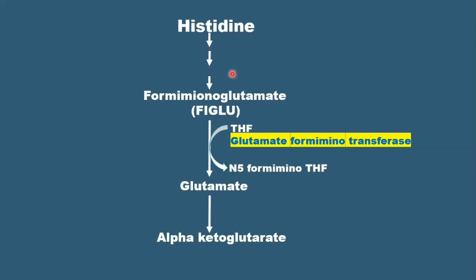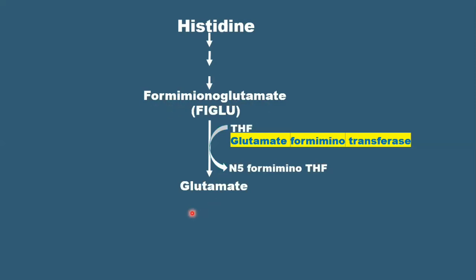You are just going to write histidine, show a series of arrows, and show that formiminoglutamate is converted to glutamate. Now, if there is a folic acid deficiency, the formimino group will not be transferred to tetrahydrofolate.